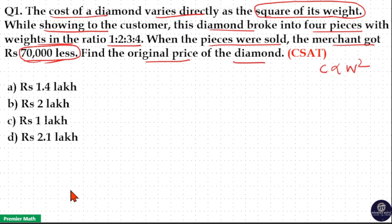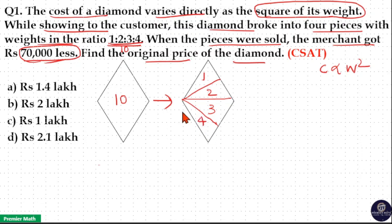Initially this diamond broke into 4 pieces, and these 4 pieces weights are in the ratio 1:2:3:4, which means 4 + 3 + 2 + 1 is 10 units. So initially this diamond weight was 10 units. Finally, it is broken into 1 unit piece, 2 unit piece, 3 unit piece, and 4 unit piece.